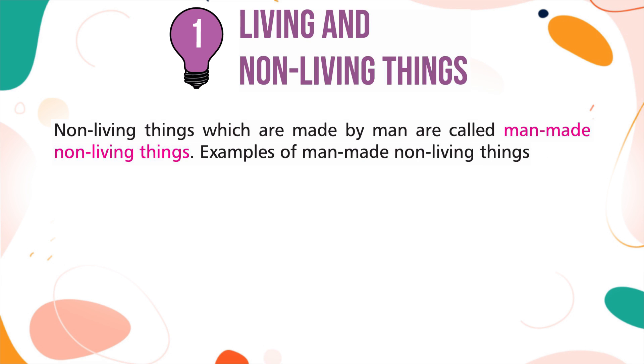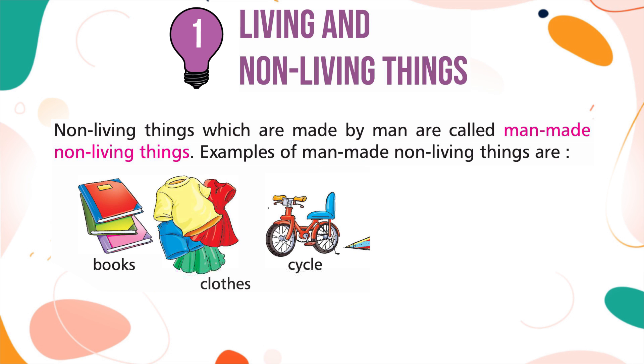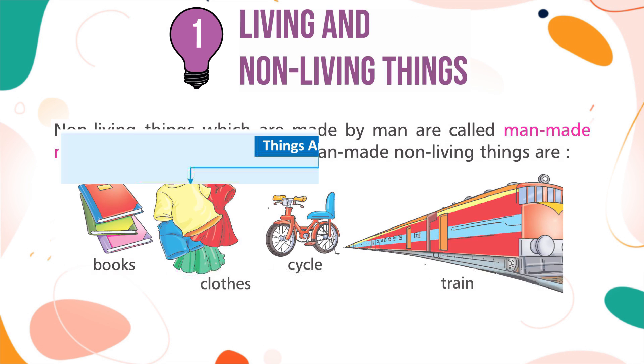Non-living things which are made by man are called man-made non-living things. Examples of man-made non-living things are: books, clothes, cycle, and train.